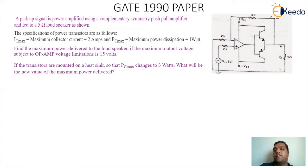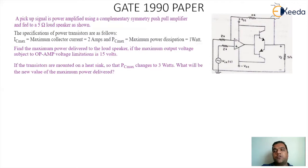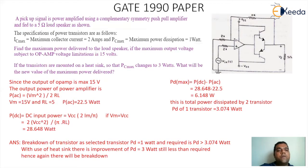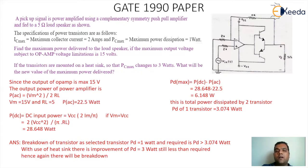The first part of the circuitry is basically an operational amplifier, and its output is given to a power amplifier — a class B circuitry — whose output is given to the load. Since the output of the op-amp is maximum 15V, the output power of the power amplifier PAC equals Vm² divided by 2·RL. With Vm = 15V and RL = 5 ohm, PAC comes as 22.5 watt.